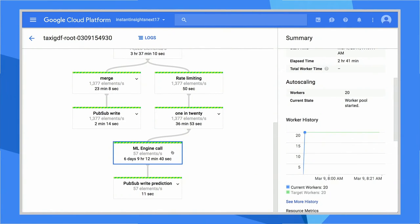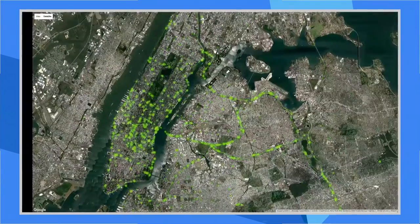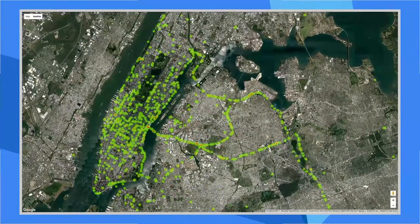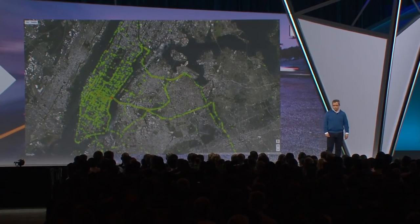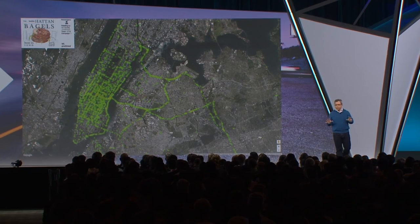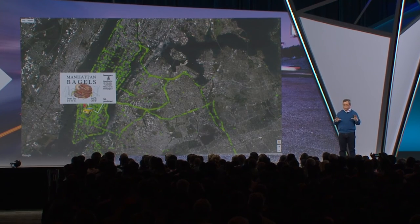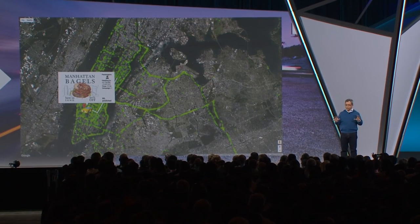So now, as our taxi data is coming in, we're calling to machine learning with the data and saying: help us choose the best ad to target for this particular user. Let's switch back over to the map with the deployed machine learning model, and now you'll see that we start seeing some interesting combinations.